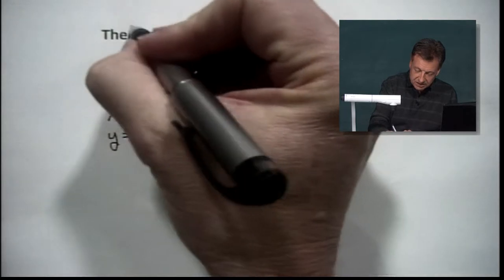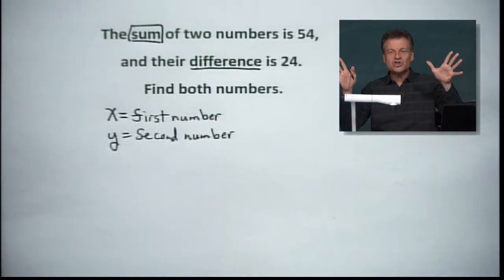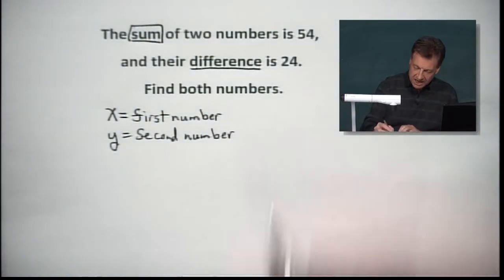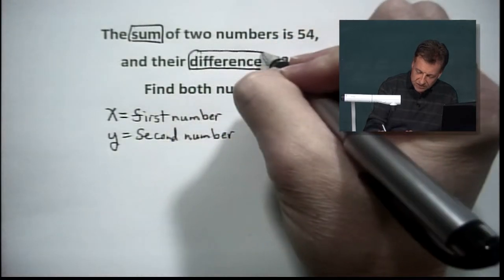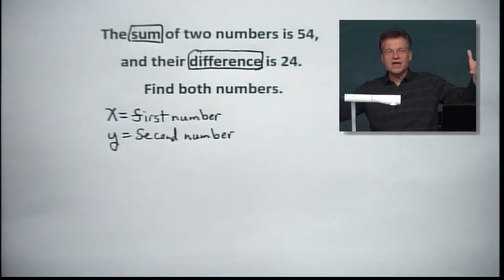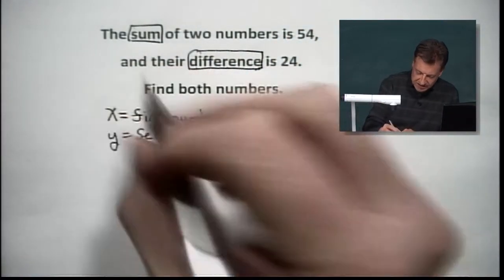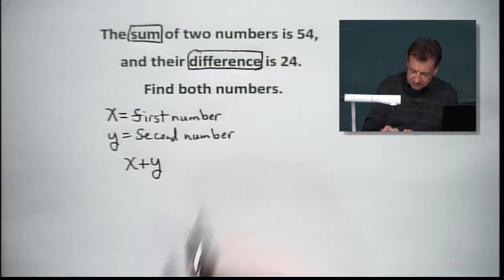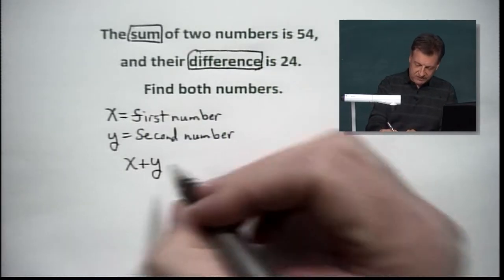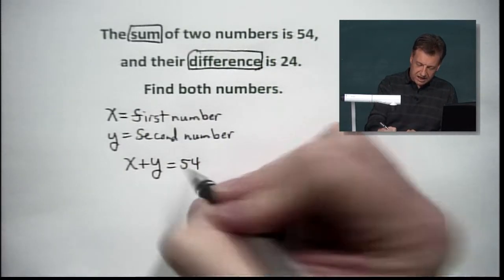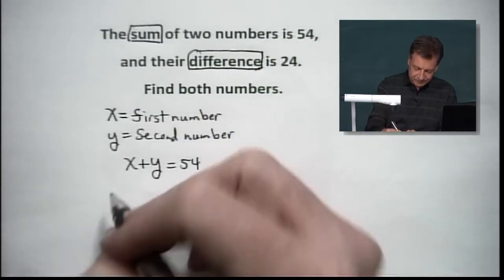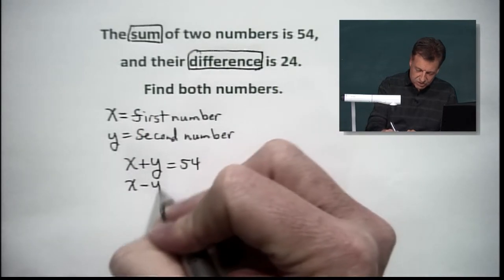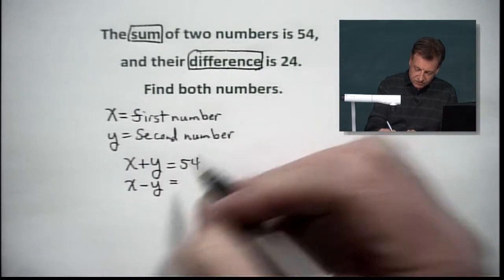Now, what happens? The sum, keywords: addition, addition. Difference, another keyword: subtraction, subtraction. So let's do it. X plus Y, that's the two numbers added together, is going to give us 54. Let's do the subtraction part. X minus Y will give us 24.